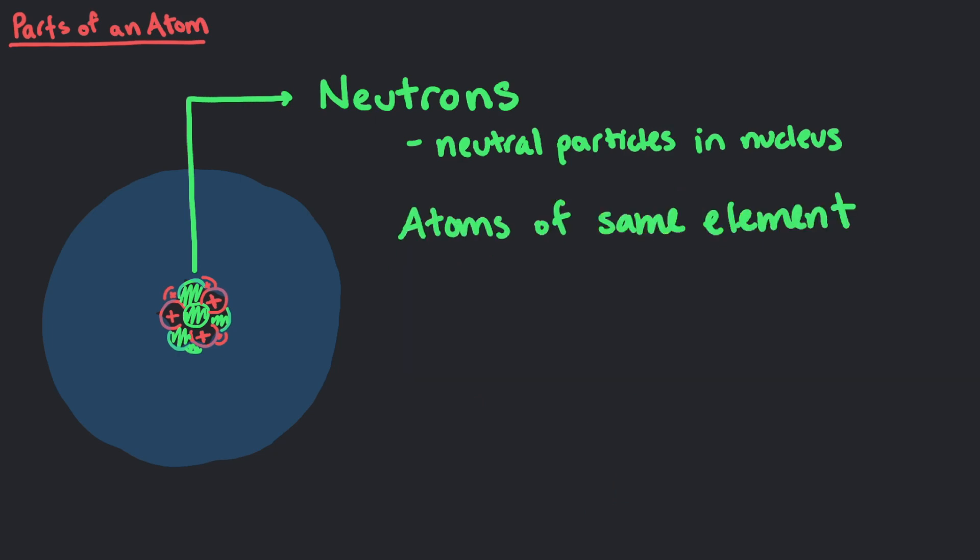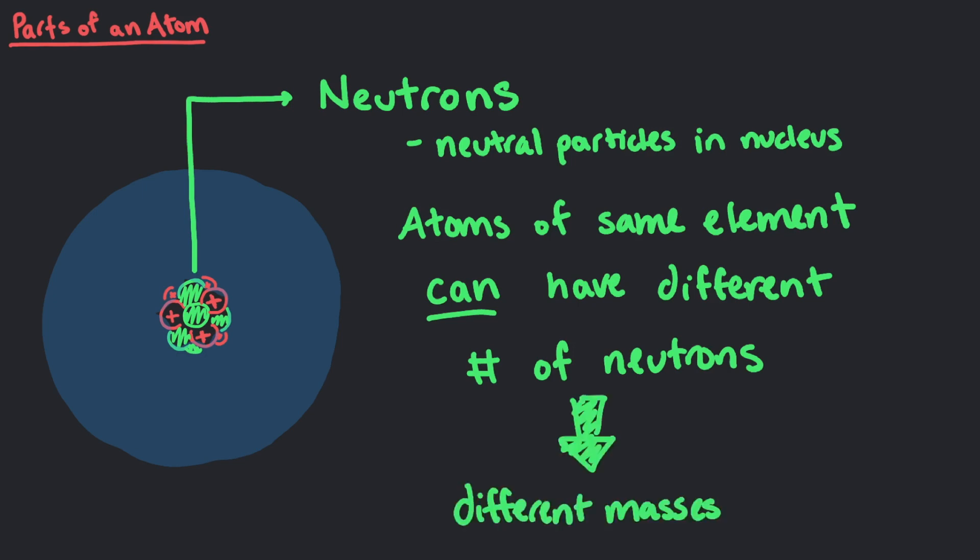Atoms of the same element can have a different number of neutrons, which means that they will have different masses. We will touch more on this topic in a later video.